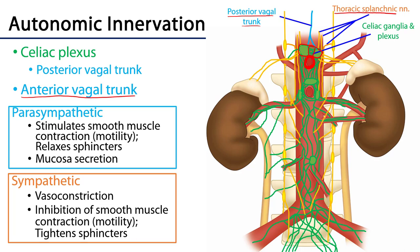In terms of autonomic actions: parasympathetic stimulation — the rest and digest division — will stimulate the smooth muscle of the gut wall to contract, enhance gastric motility, relax the sphincters flanking the stomach, and encourage the gastric mucosa to secrete. Sympathetic stimulation — fight or flight — does the opposite: it causes vasoconstriction, inhibits smooth muscle contraction and motility, and tightens the sphincters flanking the stomach.